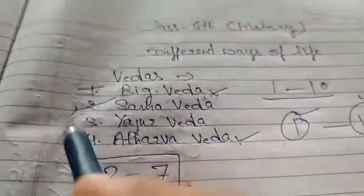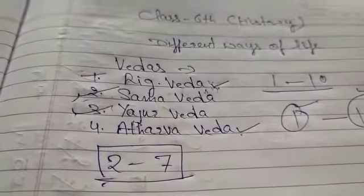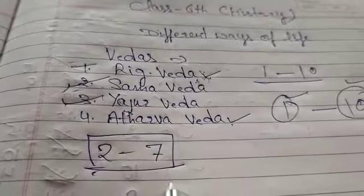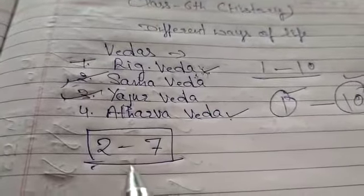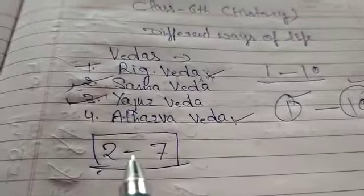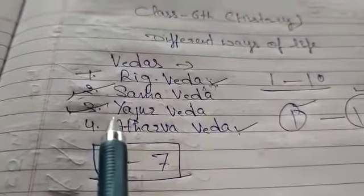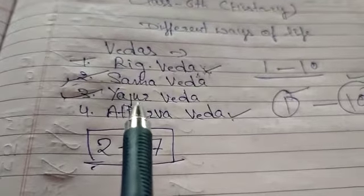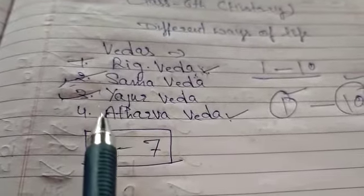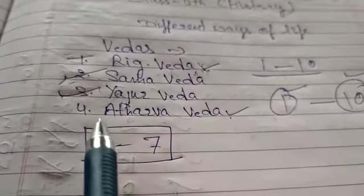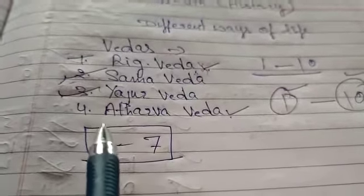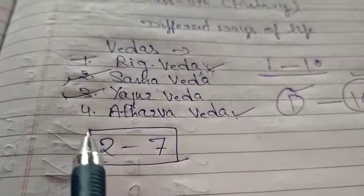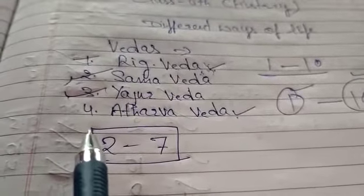Number three is Yajur Veda. Yajur Veda is associated with rituals and mentions rivers such as the Ganga and Yamuna. Yajur Veda is divided into two types: one is Krishna Yajur Veda and the other is Shukla Yajur Veda.